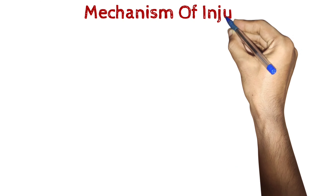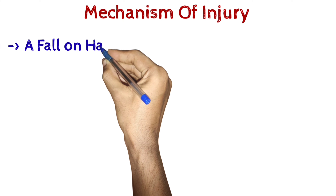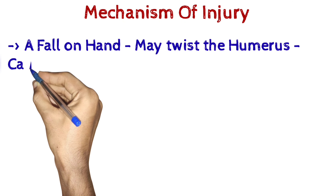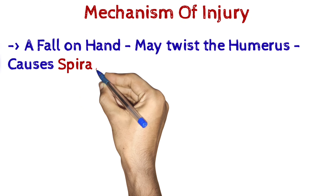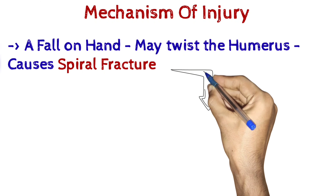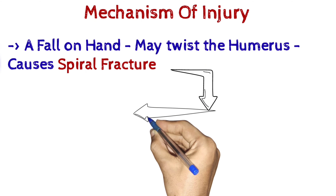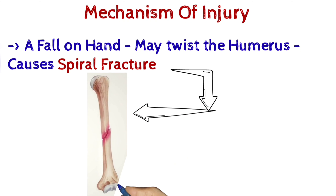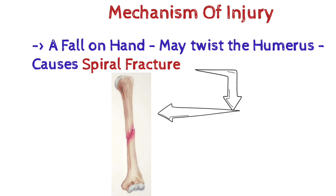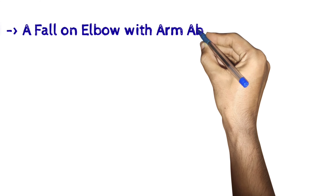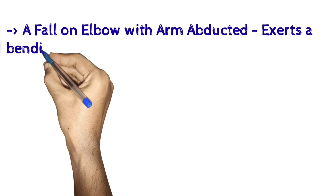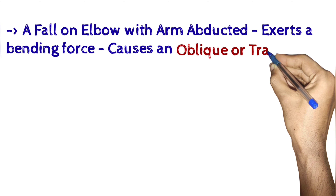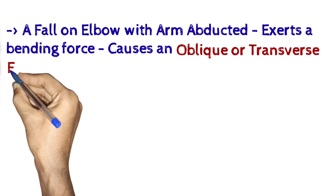Mechanism of Injury: A fall on the hand may twist the humerus and causes a spiral fracture. A fall on the elbow with the arm abducted exerts a bending force and causes an oblique or transverse fracture.